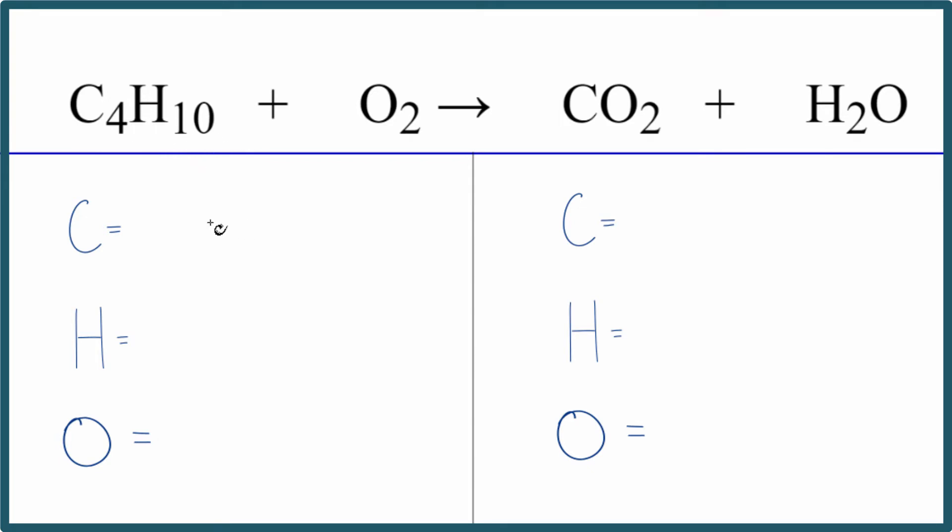So let's count the atoms up and balance the equation. For carbons, 10 hydrogens, and 2 oxygen atoms. On the product side, we have one carbon, two hydrogens, and then two oxygens plus, don't forget this one here, so we have three.